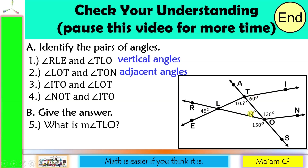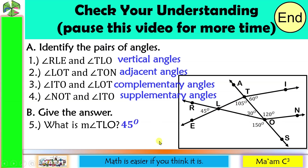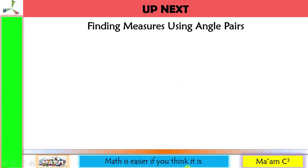Number 4, angle NOT and angle ITO — 120 plus 60 is 180, so they are supplementary angles. For the last one, what is the measure of angle TLO? Since these two are vertical angles, they are congruent. Therefore, angle TLO measures 45 degrees. Our next lesson is finding measures using angle pairs.